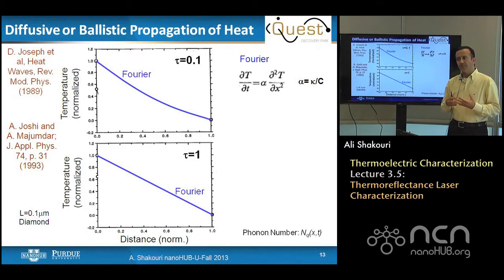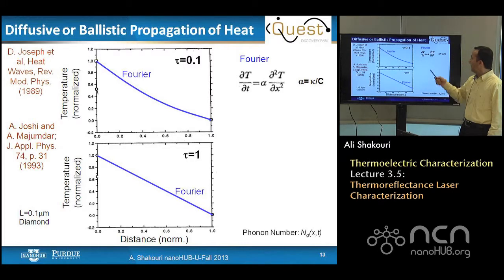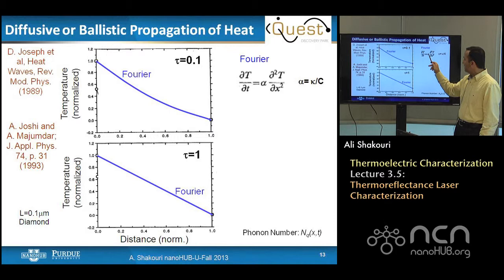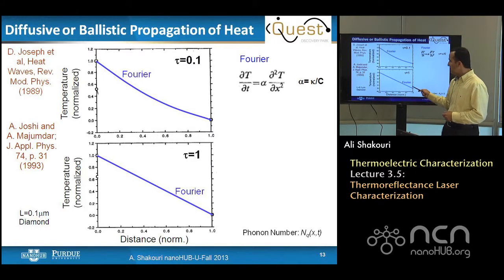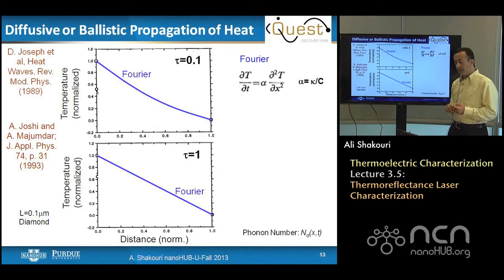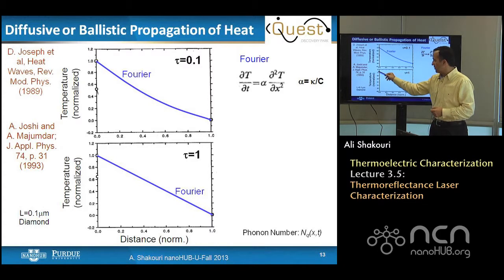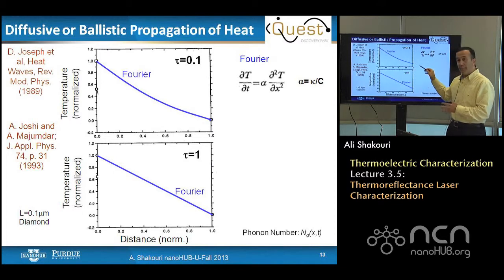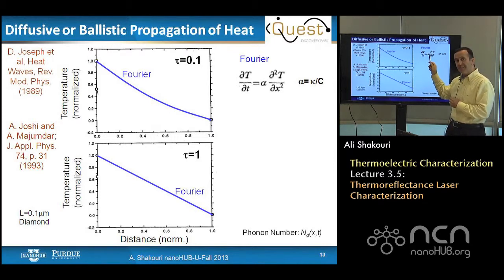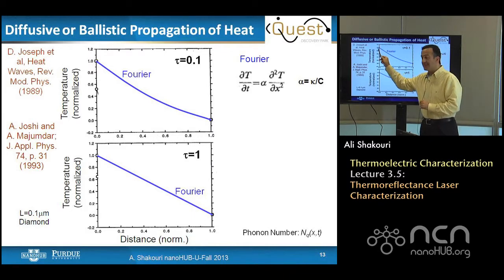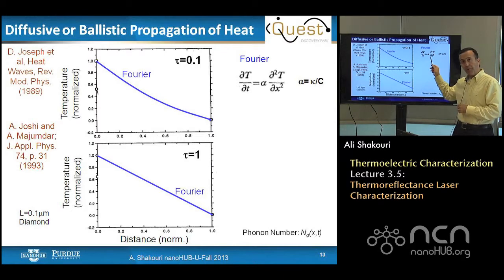Let's go back to the fundamentals: how can ballistic phonons be introduced theoretically? Fourier law tells us that the first derivative in time is proportional to the second derivative in space — a parabolic differential equation — where the coefficient is the thermal diffusivity, which is thermal conductivity divided by heat capacity. If I take ideal diamond and solve Fourier law at given times, at long times you get a straight line as expected for steady state. The basic consequence of Fourier's parabolic nature is that at any time after zero — even epsilon time after zero — temperature everywhere in the sample is non-zero, because the speed of information propagation in a parabolic equation is infinite.